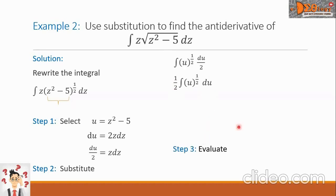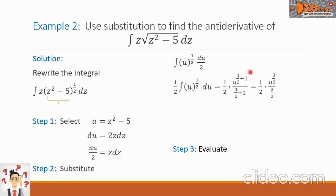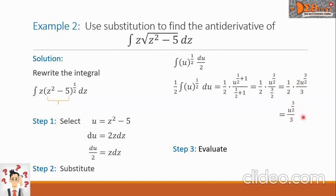We can now do Step 3 and evaluate the integral using the power rule. We have 1/2 times u raised to (1/2 + 1) all over (1/2 + 1). Since 1/2 + 1 equals 3/2, we write 1/2 times u raised to 3/2 all over 3/2. Simplifying by flipping the denominator 3/2, the 2 becomes the coefficient in the numerator, giving us 1/2 times u raised to 3/2 over 3. Canceling the 2s, we simplify to u raised to 3/2 over 3.